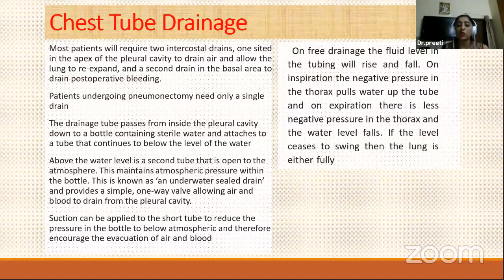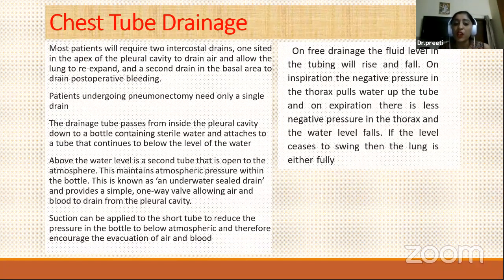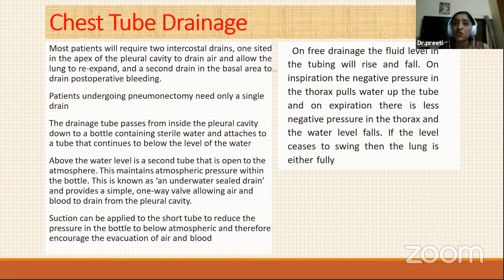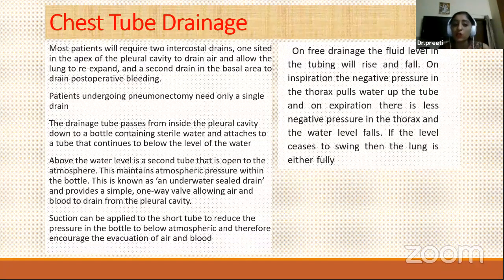Chest tube drainage is placed after every type of lung surgery. Two intercostal drains are typically placed: one at the apex of the pleural cavity for air drainage to prevent pneumothorax, and one at the base for blood drainage. Patients who have undergone pneumonectomy have a single drain, while all other lung surgery patients have two drains. Drainage passes from the pleural cavity into a sterile bottle.